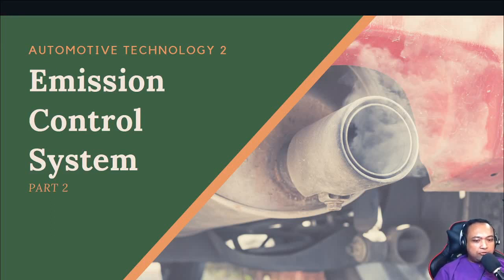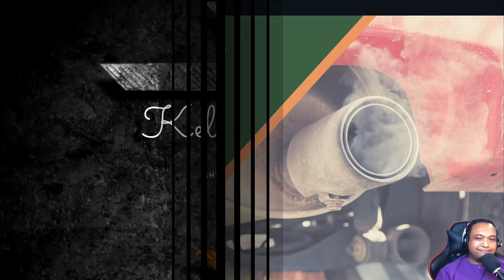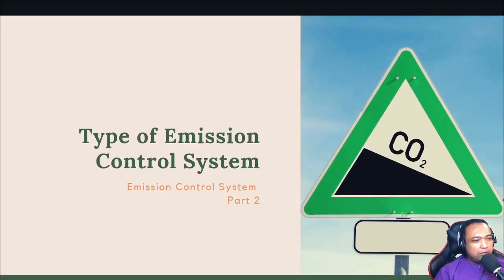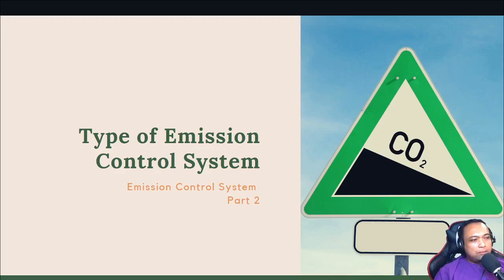Assalamualaikum. We are continuing our online lecture for the topic Emission Control System Part 2, for the subject Automotive Technology 2. In this subtopic, we are going to learn about types of emission control systems. From the previous video, I explained the sources of emissions. In this video, I'm going to talk about the control systems in our cars — how the existing technology can reduce the emission of harmful gases in our exhaust.